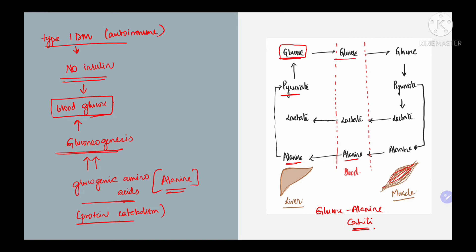This glucose enters the blood, and from the blood it reaches the muscle where it gets converted into pyruvate through glycolysis, and from pyruvate it gets converted into alanine.